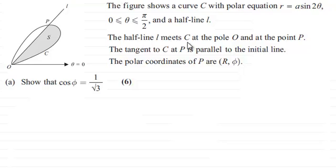The half-line L meets C at the pole O and the point P. The tangent to C at P is parallel to the initial line. The polar coordinates of P are R and φ. In part A we've got to show that cos φ equals 1 over root 3 for 6 marks.